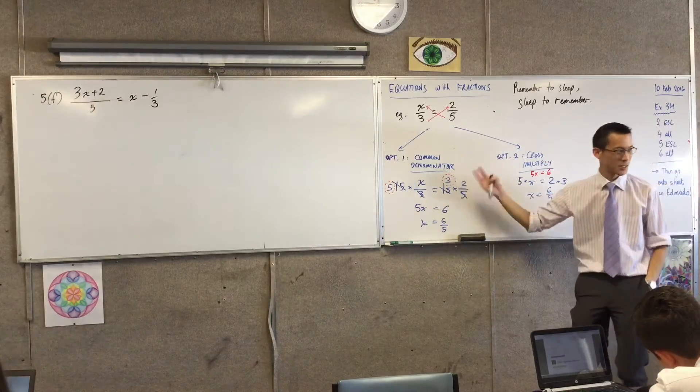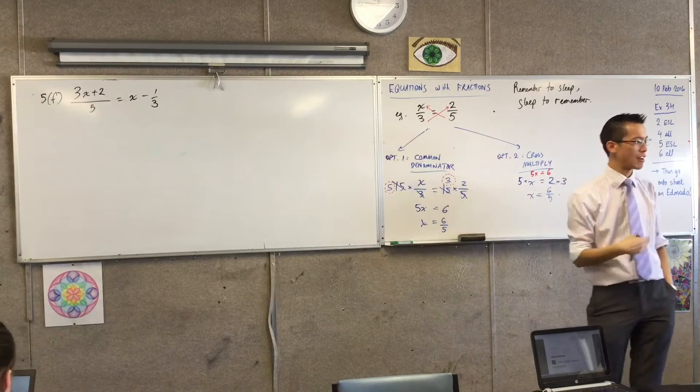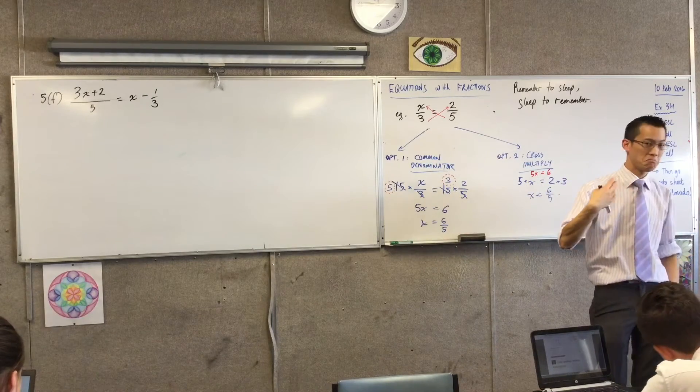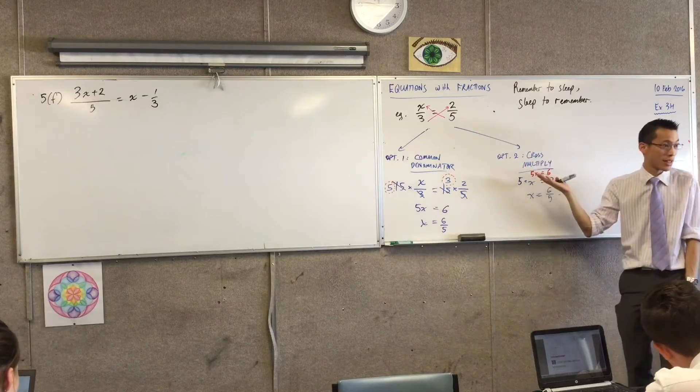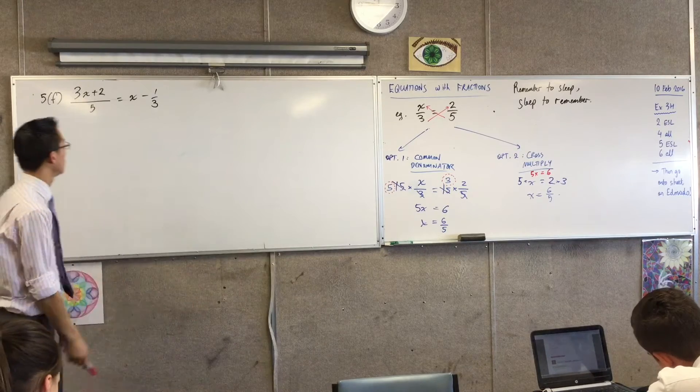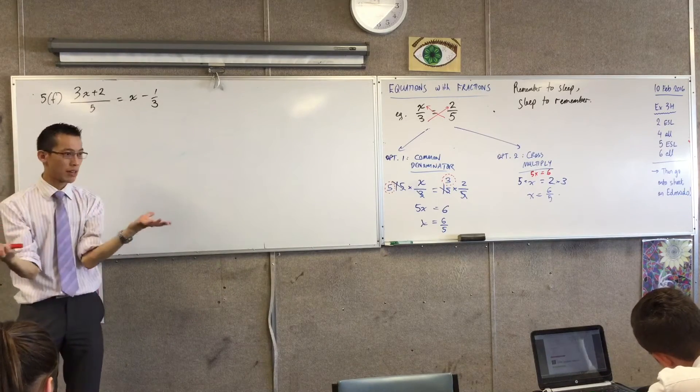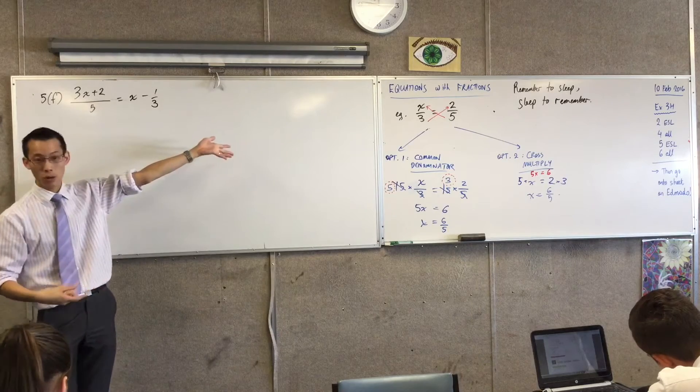Here's option one. Option one is, well, if this problem doesn't look like one of the ones that I already know how to deal with, I can just make it look like one of the ones that I do, right? Why this looks different is because the right-hand side is not one fraction. Do you agree? If it were, then we could go to one of these and it would be fine.